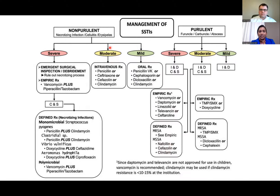This diagram is fantastic because it breaks down purulent versus non-purulent cellulitis very nicely. For non-purulent mild cellulitis, oral antimicrobials — preferably a beta-lactam like penicillin VK, cephalosporins, dicloxacillin, or clindamycin if needed — are appropriate. For moderate cellulitis — redness and warmth but no purulence — you'll probably need to admit the patient or give IV antimicrobial therapy, targeting strep species with penicillin, ceftriaxone, cefazolin, or clindamycin.